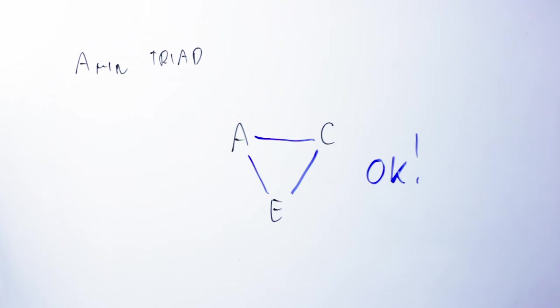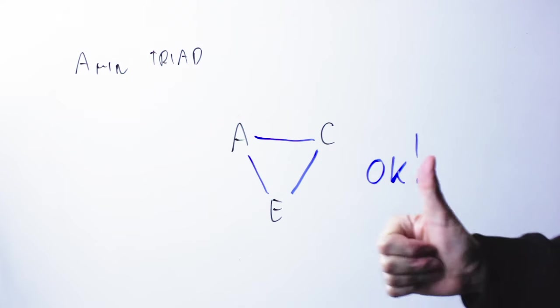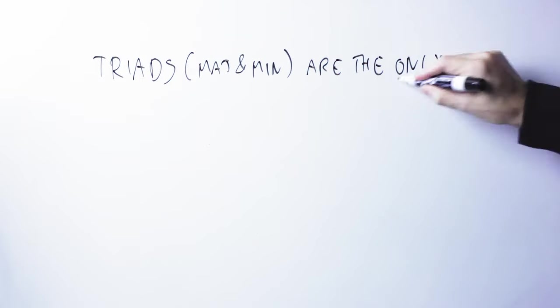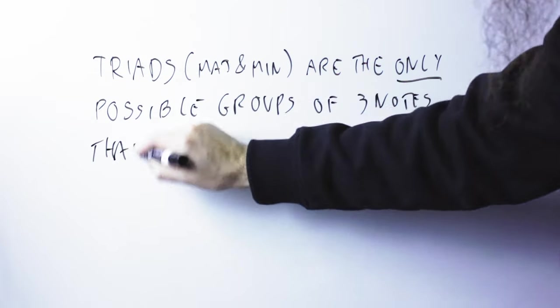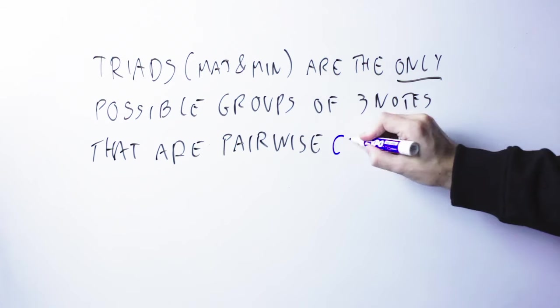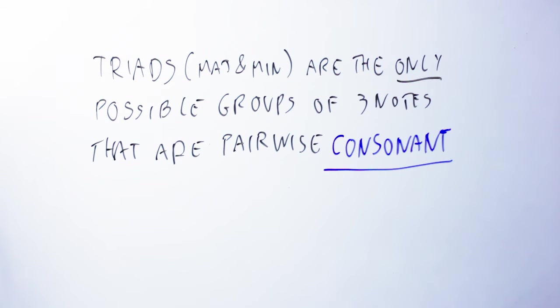And if I turn those notes around, and so I do all the inversions of the chords, still all the relationships are consonant. Fantastic! That's why triads are important, because they are the only possible groups of three notes that are pairwise consonant, meaning that all the three relationships between the notes turn out to be consonant.